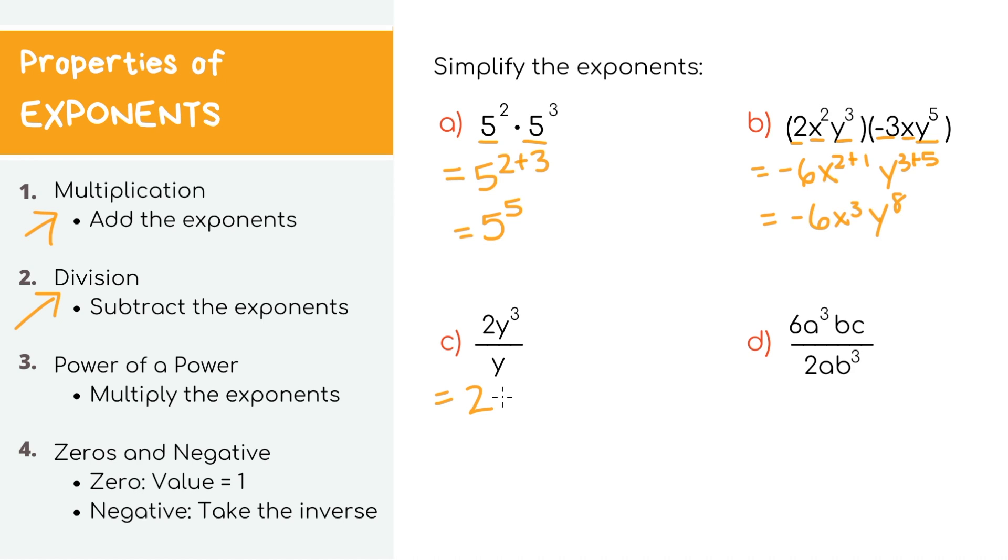Because they have the same base of y, we can subtract the exponents. So, 3 minus 1. Simplifying, we'll end up with 2y².